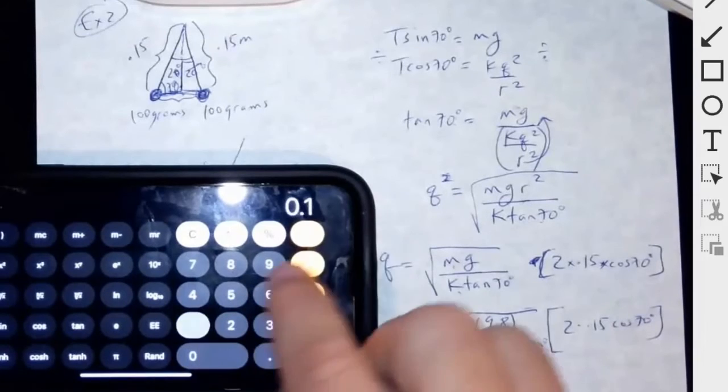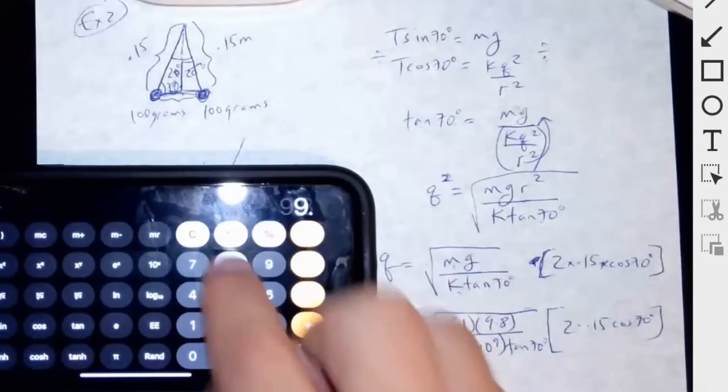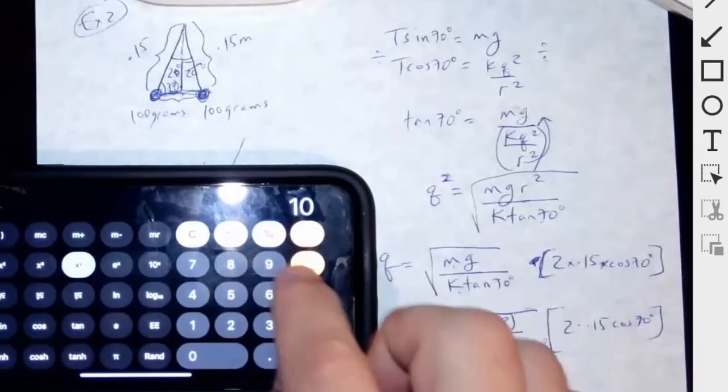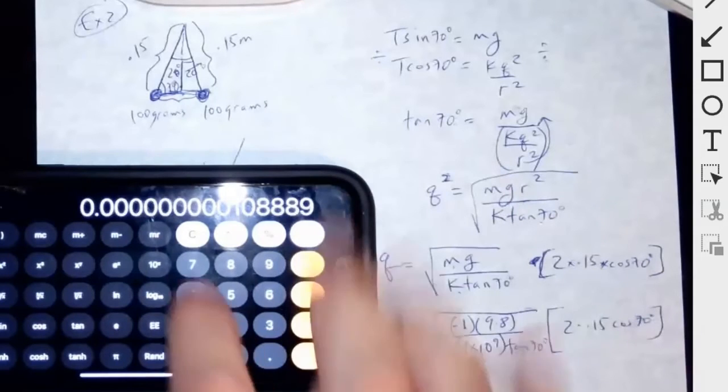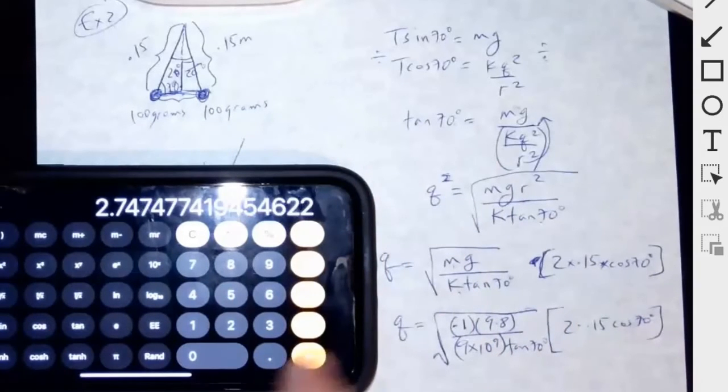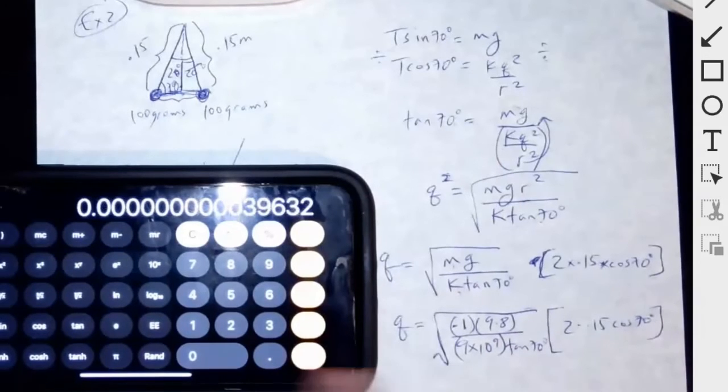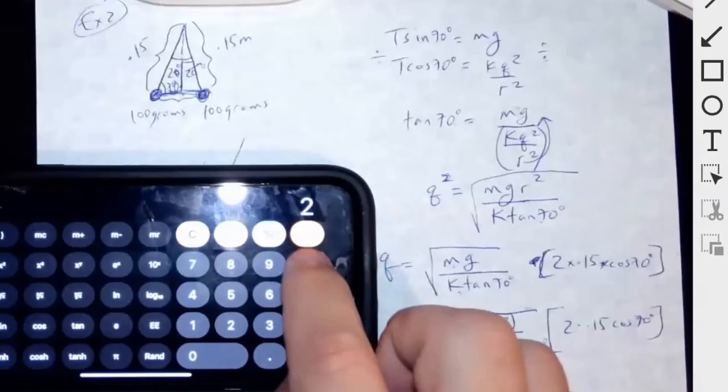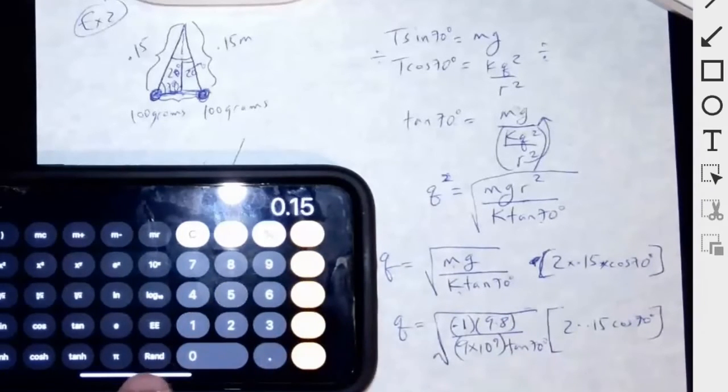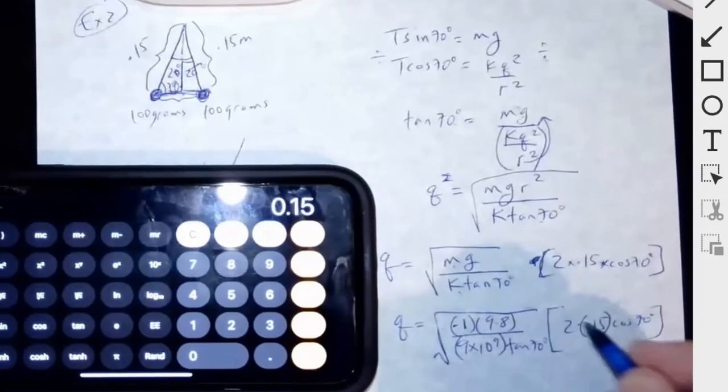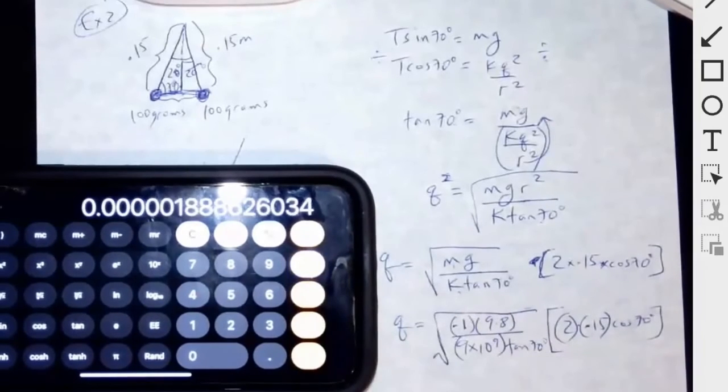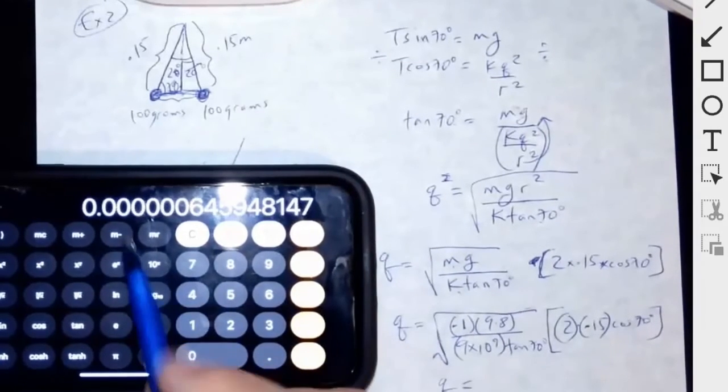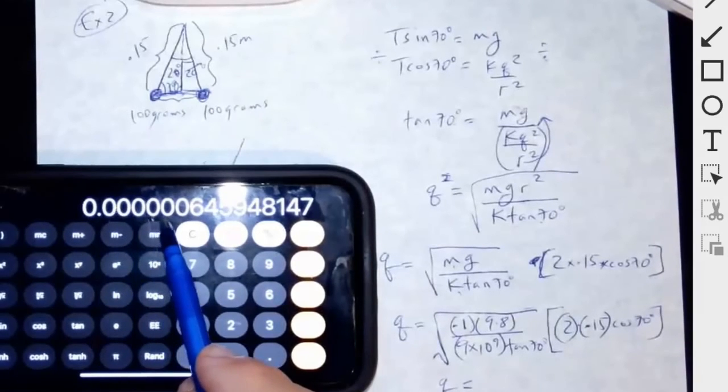So I get 0.1 times 9.8 divided by 9 divided by 10 to the power of ninth divided by tangent 70 equals. Then you square root that. So 1, 2, 3, 4, 5, 6.